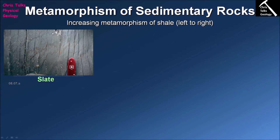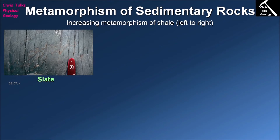We've ended up forming a cleavage by compressing these clay minerals. You can see the cleavage is oriented approximately north–south because the rock has been compressed approximately east–west — the cleavage forms at 90 degrees to the direction of compression. So once again the cleavage runs top to bottom, meaning our rock must have been compressed left to right. This leads to the formation of a metamorphic rock we call slate.